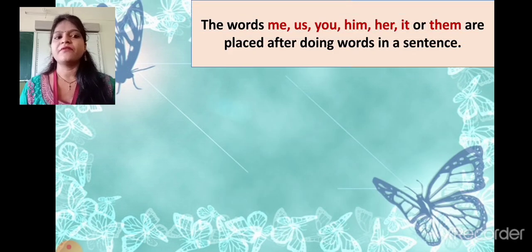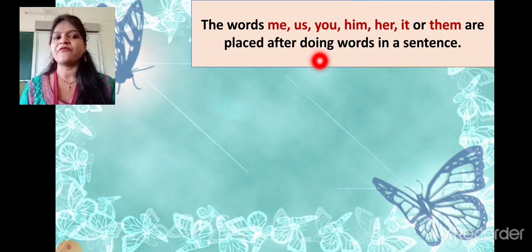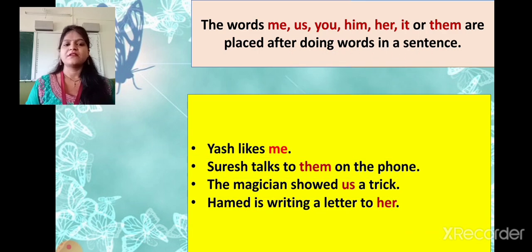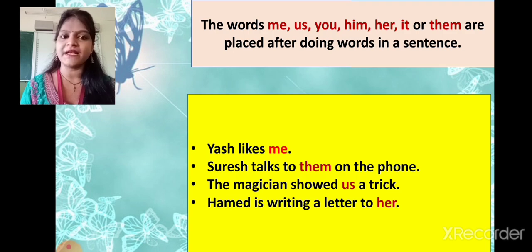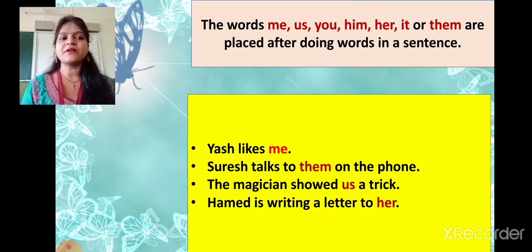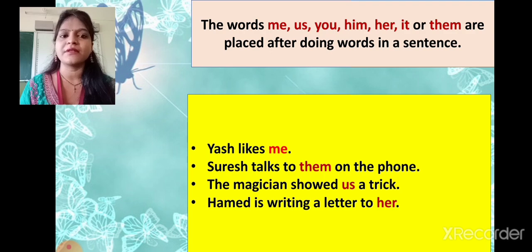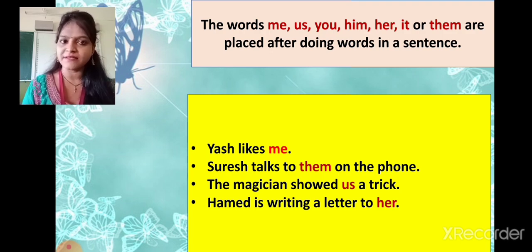Now, the words me, us, you, him, her, it and them are placed after doing words in a sentence. For example: Yash likes me. Suresh talks to them on the phone. The magician showed us a trick. Hamid is writing a letter to her. So students, me, us, you, him, her and them are used after the doing words in a sentence.